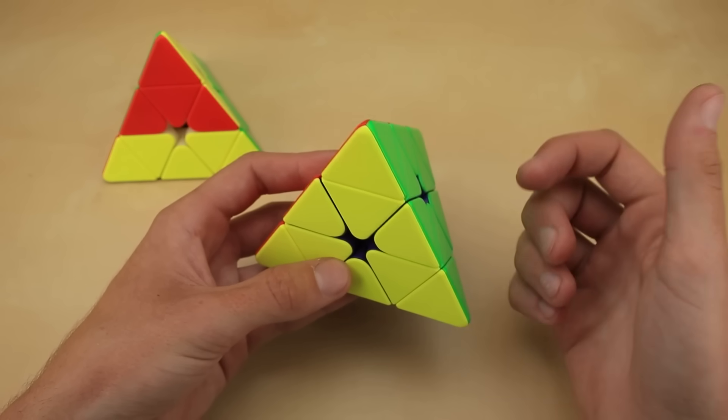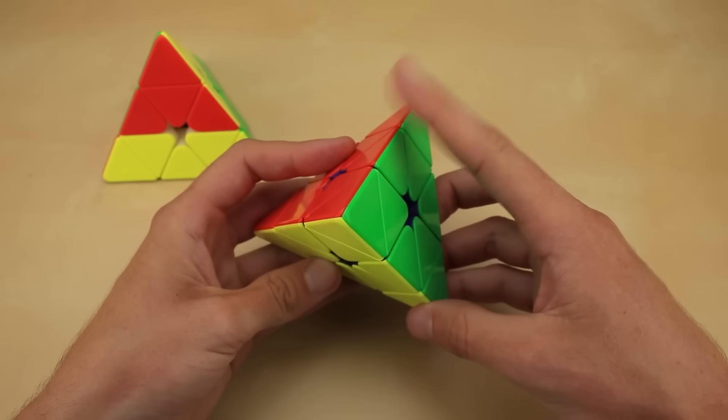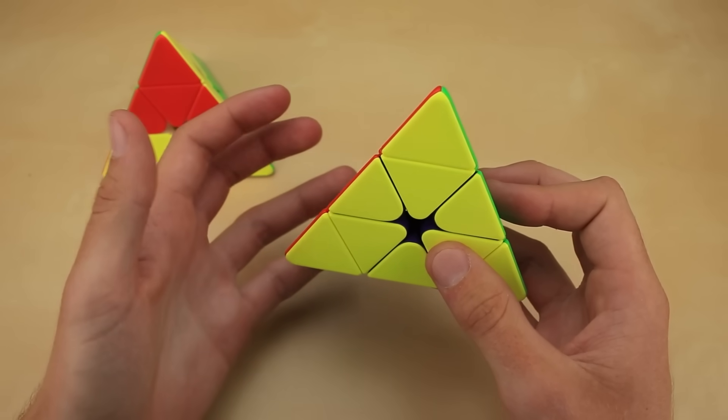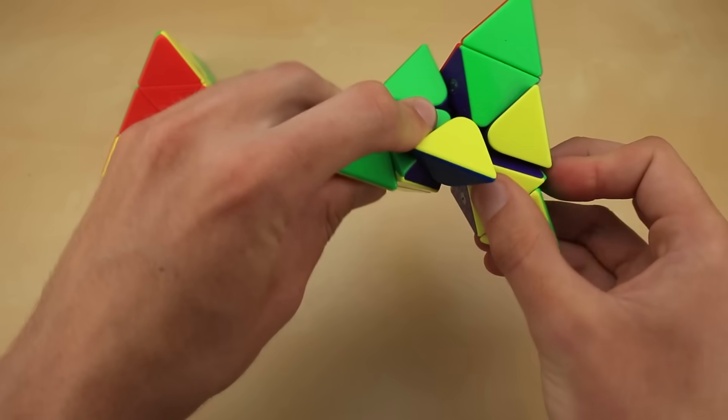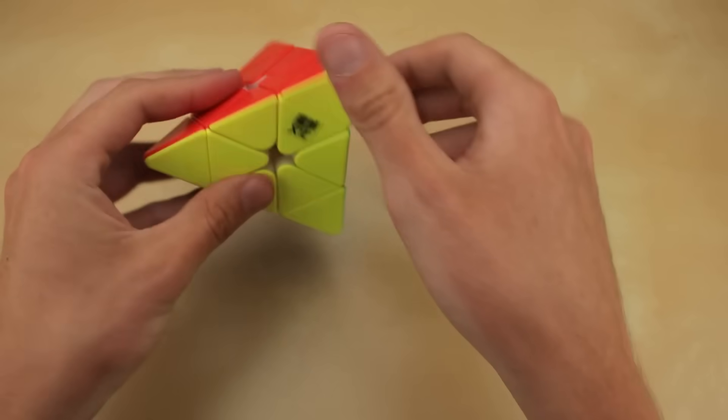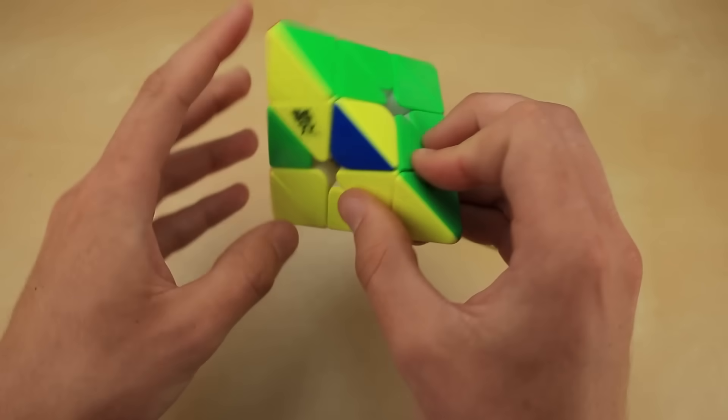Keep in mind that both these Pyraminxes are on the same magnet strength, the same tensions, and are lubed identically. The difference becomes even more apparent if you just try and turn them normally. This one feels, frankly, uncontrollably fast, whereas this one just feels like a regular old Pyraminx, nice and controllable.